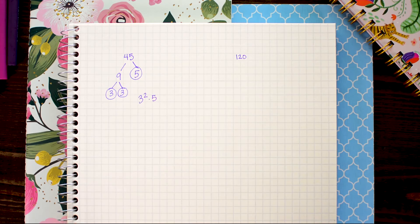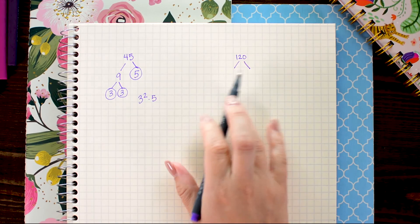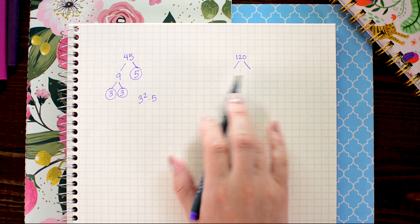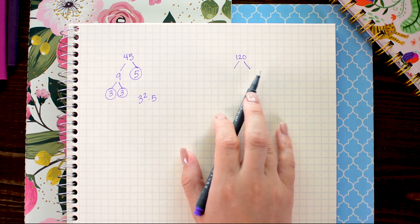Let's try another one. Here I'm going to do my two branches off of 120 and the first numbers that I can think of are 10 times 12.